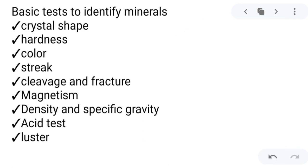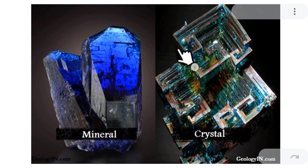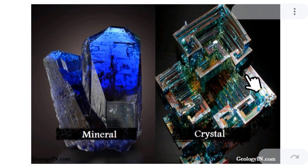Now let us proceed to the basic tests to identify minerals. First, we have crystal shape. If a mineral sample is a well-developed crystal, its crystal shape is an important clue to its identity. All crystals have a flat shape and a defined structure visible under a microscope. There must be a presence of crystal shape indicating an orderly atomic arrangement.